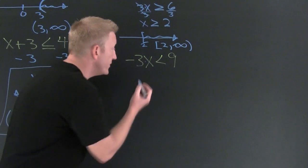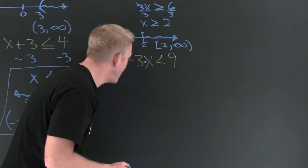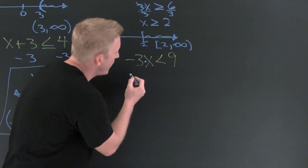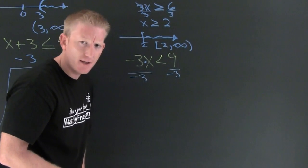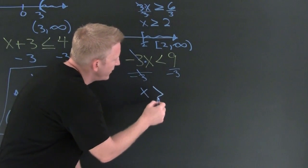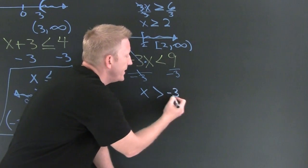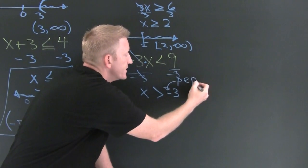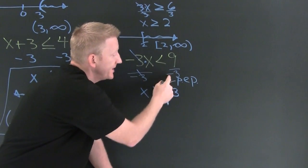This is the special case: whenever you multiply or divide by a negative number, you have to flip the sign. So I divide both sides by negative three. Your spider senses should be tingling — flip the sign. Nine divided by negative three is negative three. Watch out: a common error is remembering to flip the sign but forgetting to negate the other side.